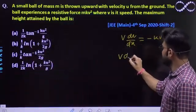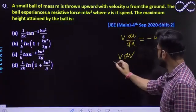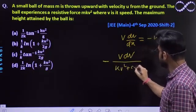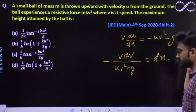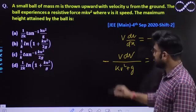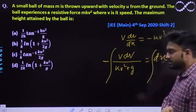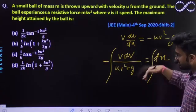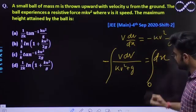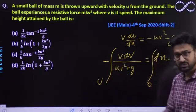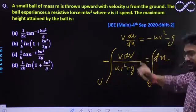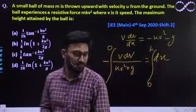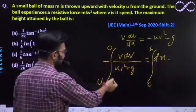The v dv expression, we'll put all values here. Taking negative sign to this side, kv² plus g, and dx has gone to this side. We have to integrate this. When x is at zero, the velocity is u. When x goes to maximum height h, the velocity becomes zero. We'll integrate this further.